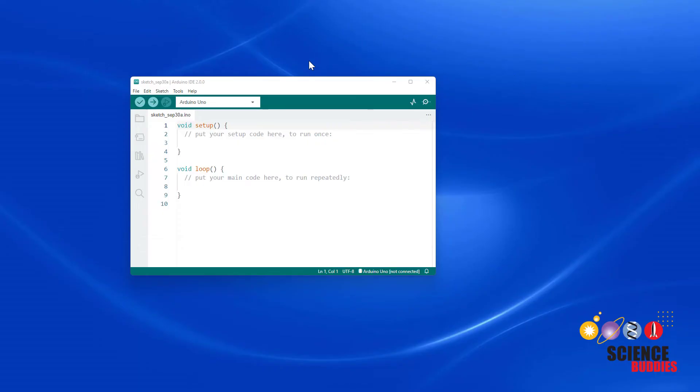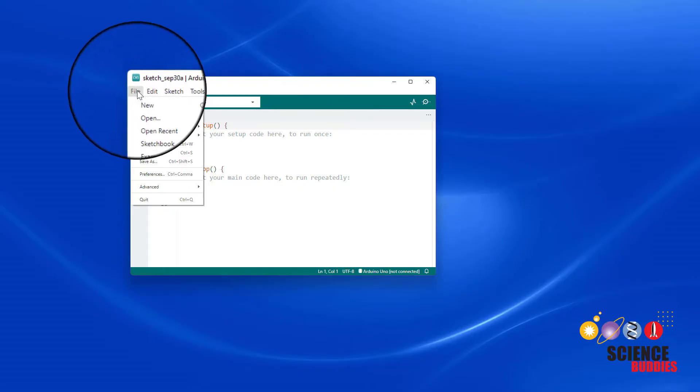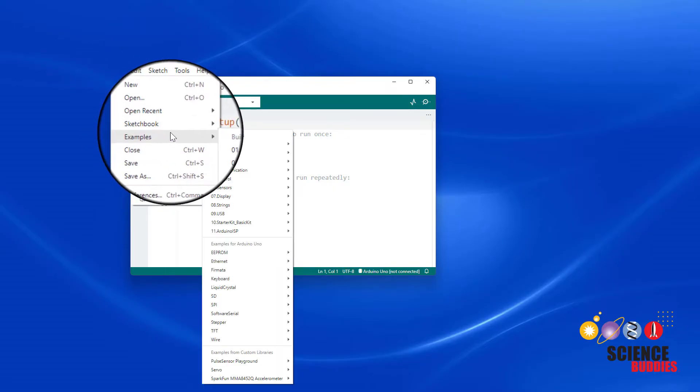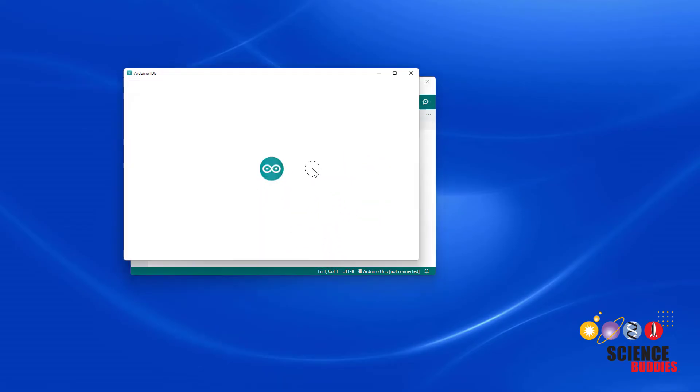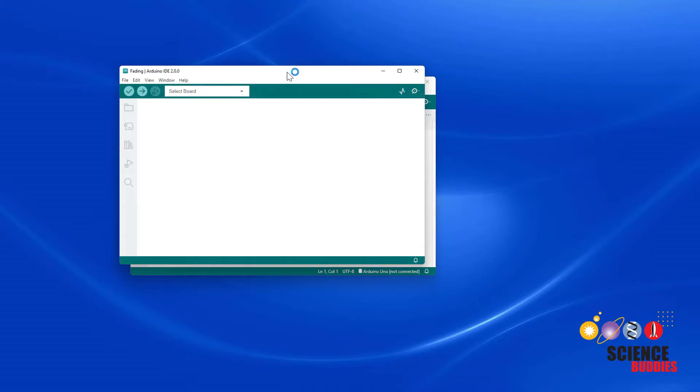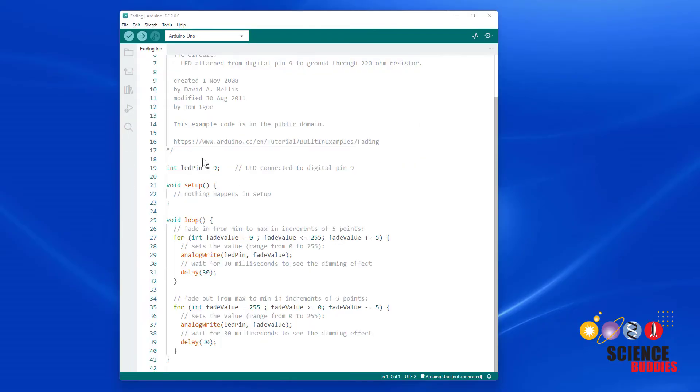Let's switch over to the Arduino IDE and we're actually going to use one of the built-in example programs to demonstrate this. Open the IDE then select File, Examples, Analog, Fading. And this will open the example fading program. Let's take a walk through this code and explain how it works.